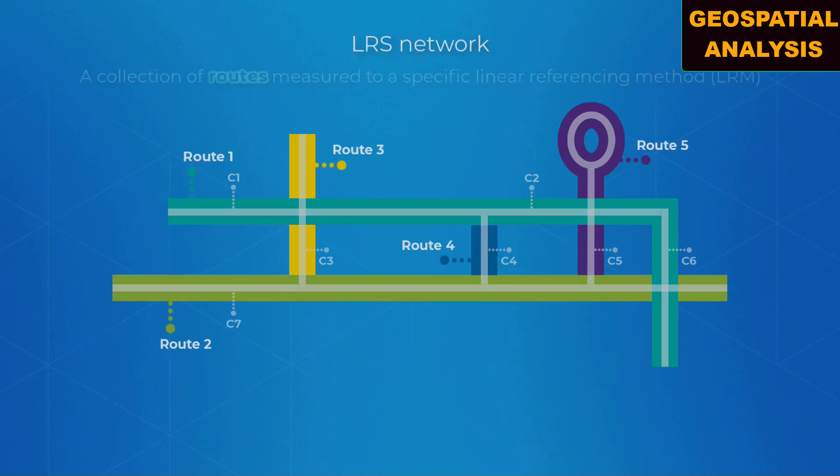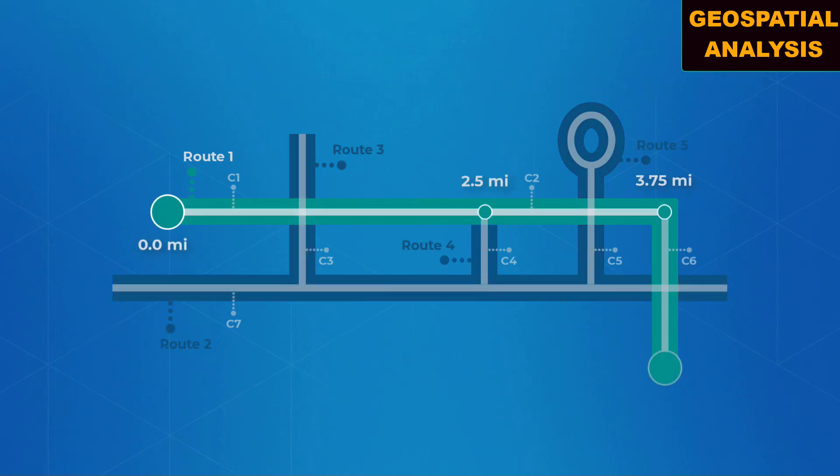A network is a collection of routes measured to a specific LRM. The LRM defines measurements along routes within a network. Like centerlines, each route in a network has a unique route ID.